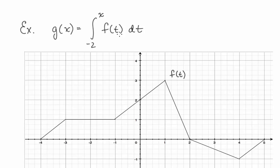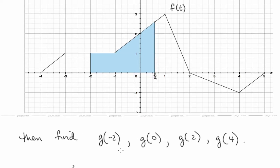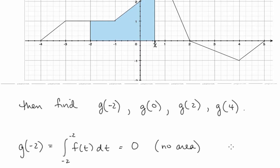In terms of areas, this is any x value and we're taking the integral from negative 2 to x of f(t). Let's find g(−2), g(0), g(2), and g(4). Well, g(−2) is defined to be the integral from negative 2 to negative 2 of f(t). Notice the bounds are the same, so this must equal 0 — there's no area.